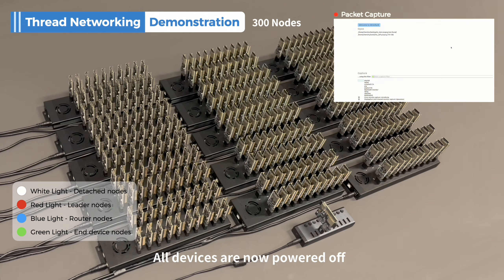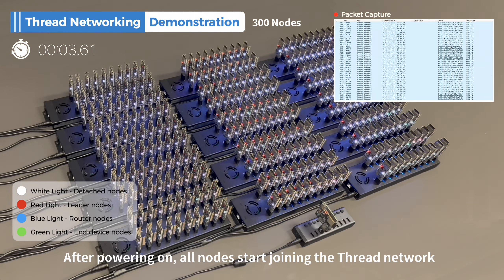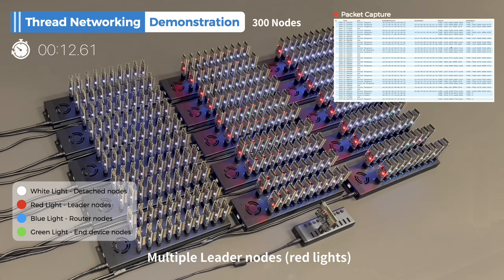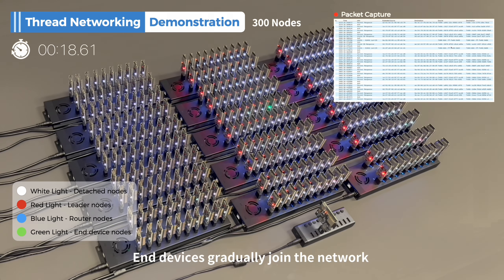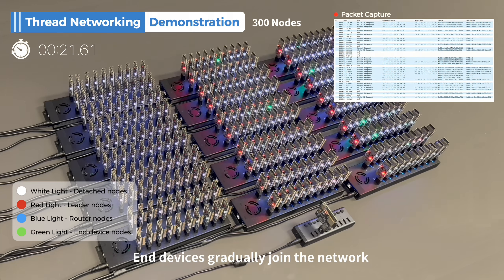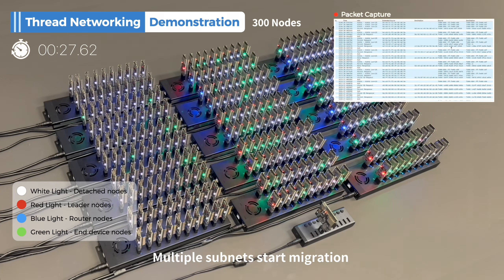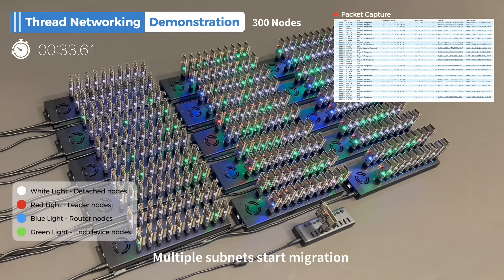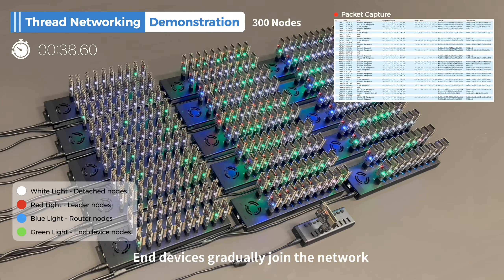All devices are now powered off. Next, power up all nodes simultaneously. After powering on, all nodes start joining the Thread network. Multiple leader nodes appear, and end devices gradually join the network.